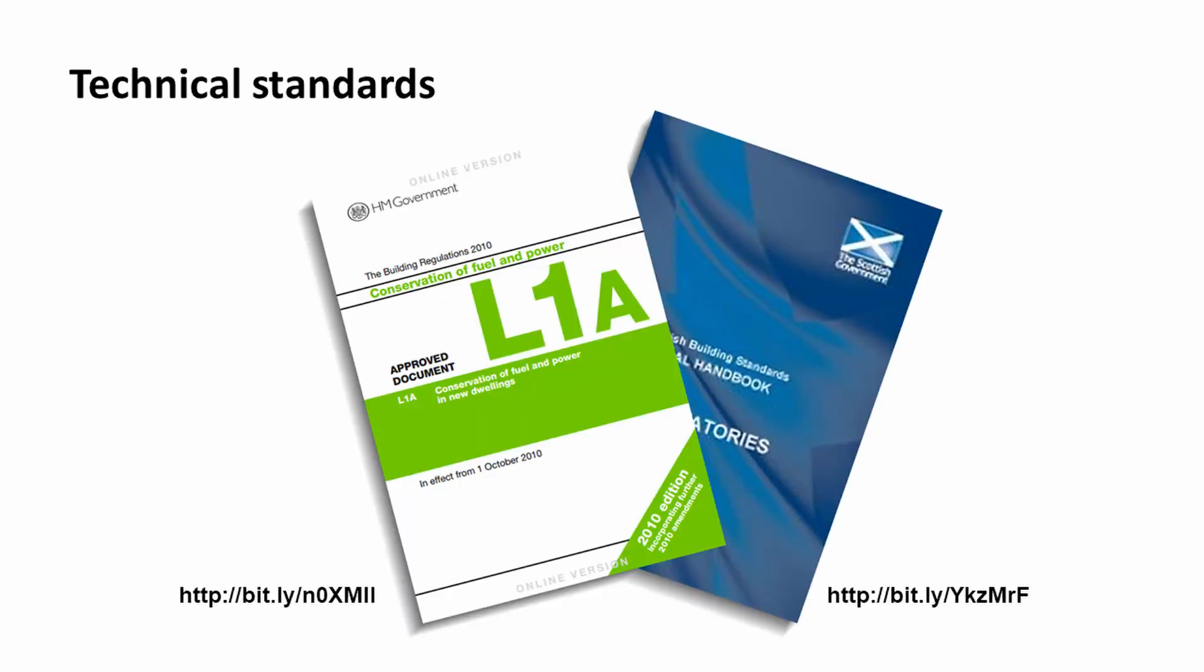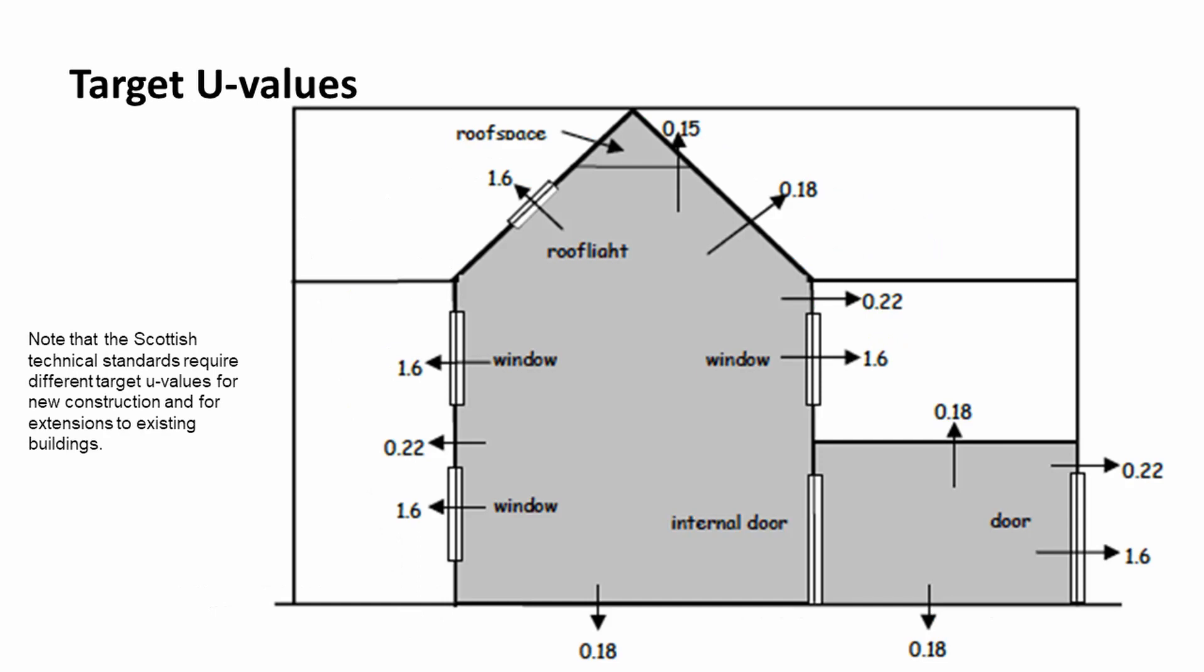So one of the things we need to understand is where we're getting our information from and what standards do we need to achieve. And in Scotland, we have our own technical standards. They're different from the rest of the UK and they set out target U-values. So we have values such as 0.18 for a roof, 0.22 for a wall, etc.